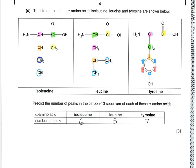This question is also testing carbon-13 NMR. We've got to predict the number of peaks in the carbon-13 spectra of three alpha-amino acids. I've highlighted the different environments. In isoleucine, there are six carbon environments, so there would be six peaks. In leucine, there would be five. In tyrosine, there are seven — this one's more tricky because of the benzene ring. Some carbons are separate and unique, the carbon bearing the OH is unique, but two carbons on the ring are equivalent to each other, and another two are equivalent, giving seven altogether.